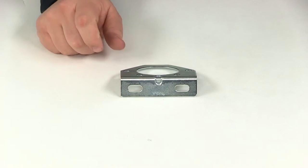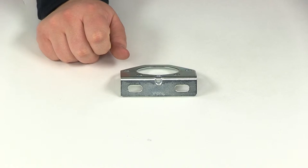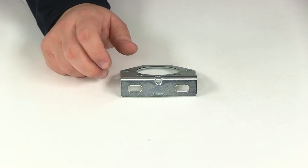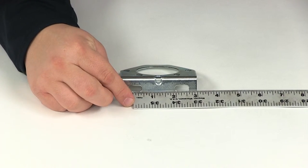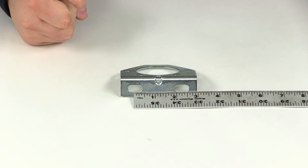So these measure 5 eighths by 5 sixteenths and then the measurement that we have center on center, the distance between those two holes, measures 2 and 1 quarter of an inch.